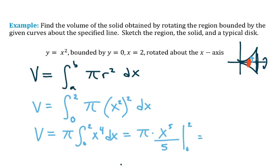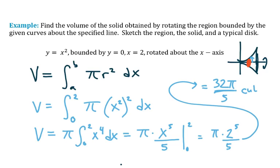And evaluate from zero to two. So plugging in the upper limit of integration, I'll have two to the power of five, and plugging in the lower limit of integration, you guys can see that plugging in zero would just zero out that whole term. So pi times two to the fifth over five, or sounds like 32 pi over five cubic units, would be the volume of the region that we're interested in.